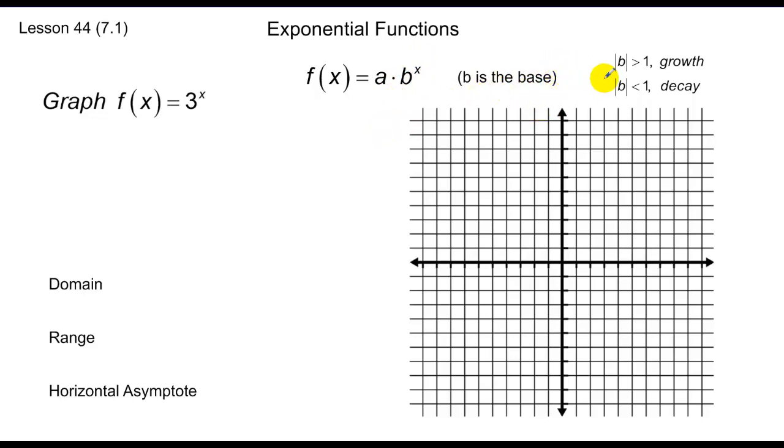Where b is that base. If the absolute value of this base is greater than 1, we say this is an exponential growth type problem. If the absolute value of b is less than 1, in other words some fraction between 0 and 1 in absolute value, we say that's a decay.